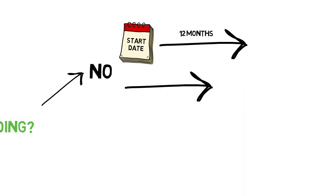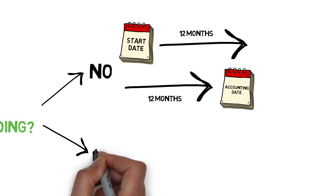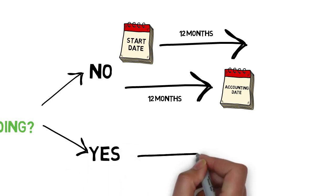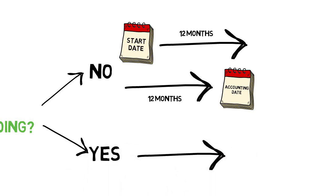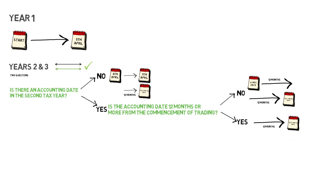It means that you're likely to pay tax twice on a proportion of profits during those early years. If the answer is yes, then your basis period will align with your accounting year from then on, but this might still mean that you'll pay tax twice on some of your earlier activity. There is one way to avoid these overlap profits entirely, and I'll cover this in the following four examples.